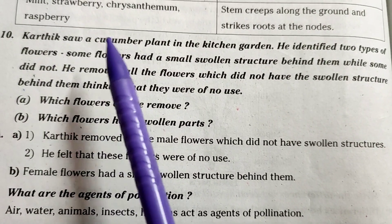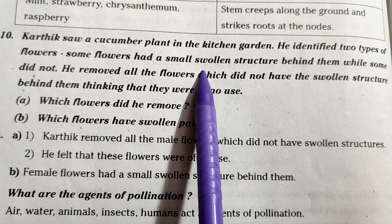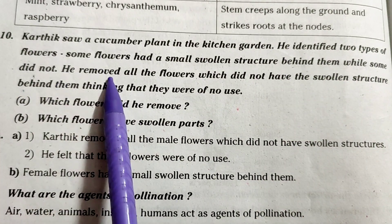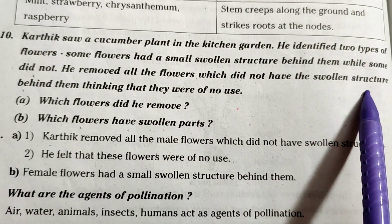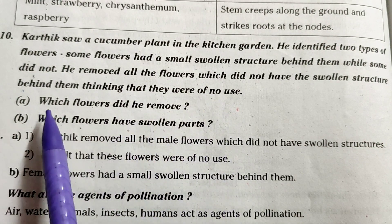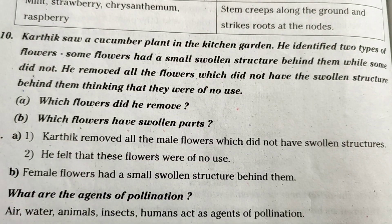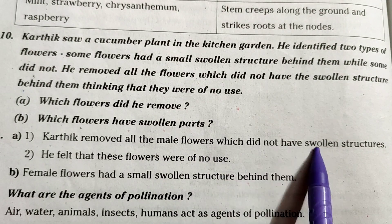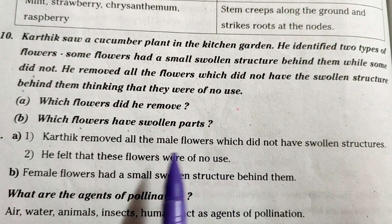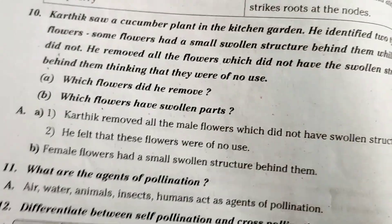Karthik saw a cucumber plant in the kitchen garden. He identified two types of flowers: some flowers had a small swollen structure behind them while some did not. He removed all the flowers that did not have the swollen structure, thinking they were of no use. Karthik removed all the male flowers, which did not have swollen structures. Female flowers had a small swollen structure behind them.